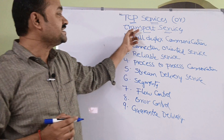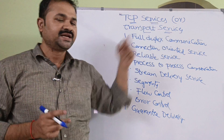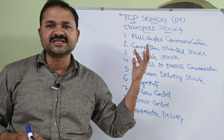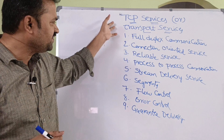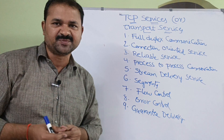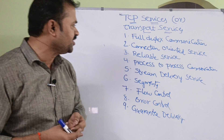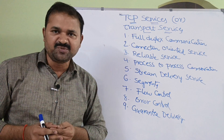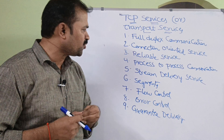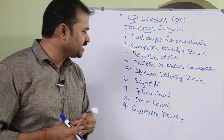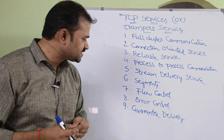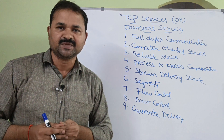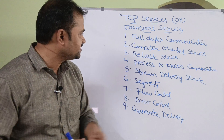Let us discuss about TCP services — the transport services or responsibilities of the transport layer. Mainly we have nine services or nine responsibilities. First is full duplex communication, second is connection oriented service, third is reliable service, fourth is process to process communication, fifth is stream delivery service, sixth is segments, seventh is flow control, eighth is error control, and the ninth is guarantee delivery. Now let us discuss all these services one by one.